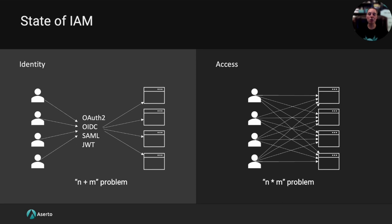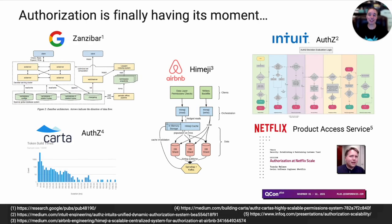It is a completely terrible state of affairs, and I would argue it's the number one issue in the identity and access management industry. Now, it's not all bad news. Authorization is finally finding its moment in the sun. The large technology companies have spent a lot of time on their own internal authorization systems and have been kind enough to share their lessons. Google wrote a paper called Zanzibar about their internal system, as did Intuit about their system called AuthZ. We can now look at all these new patterns and learn how to solve this problem once and for all.